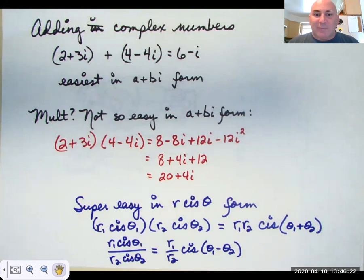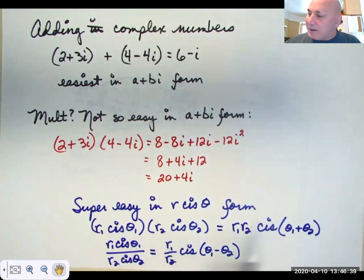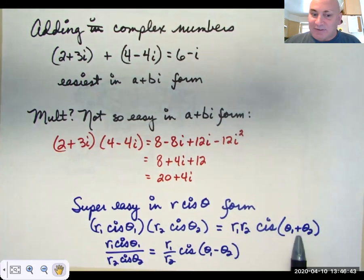Multiplying complex numbers is super easy in polar slash rectangular form. If you have one complex number, R1 cis theta 1, and you have a second complex number, R2 cis theta 2, to multiply them, you multiply the R's, add the thetas. And there's a derivation of that in your book. You multiply the R's, add the thetas.